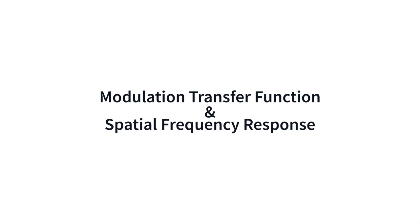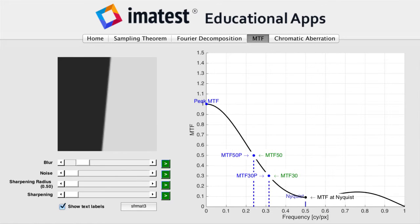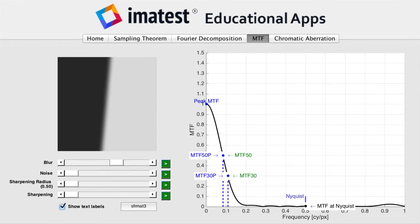The modulation transfer function, or MTF, is a fundamental measurement of an imaging system's ability to capture a scene's sharp details.